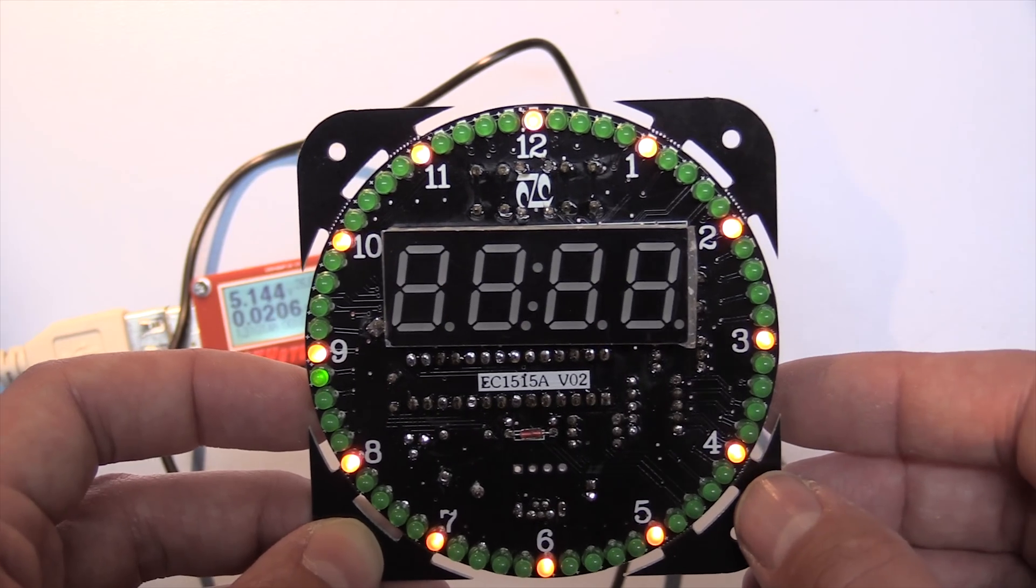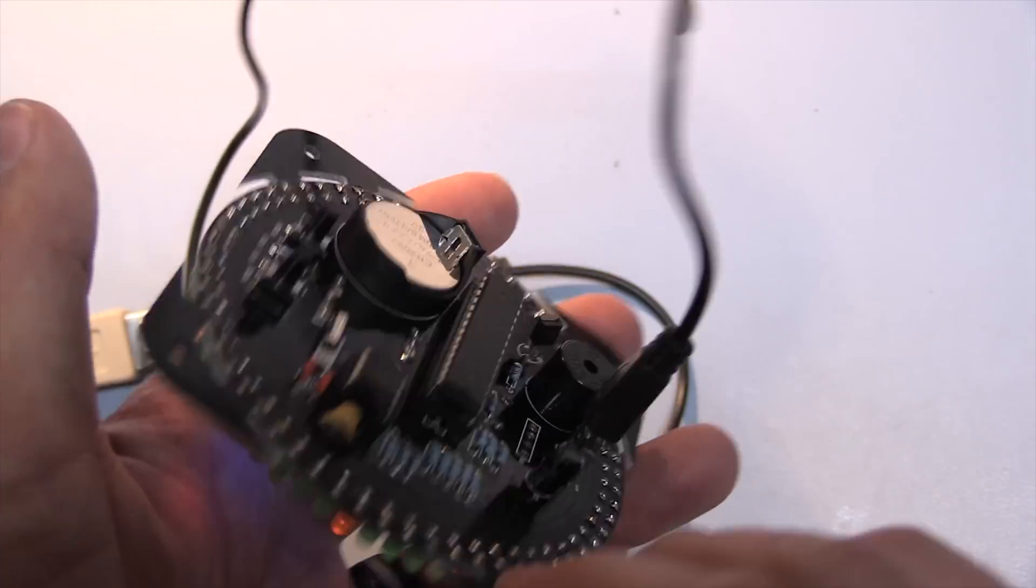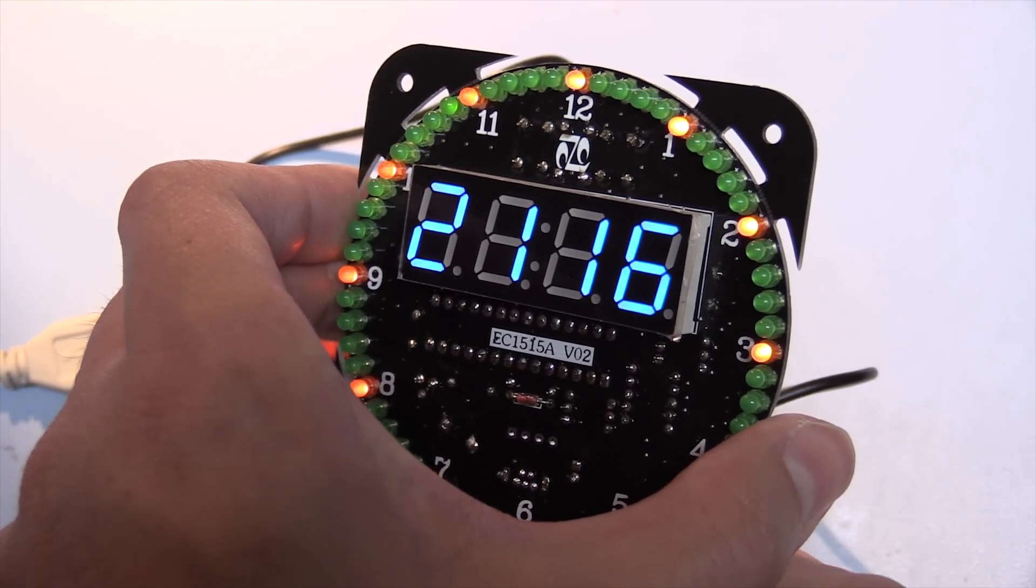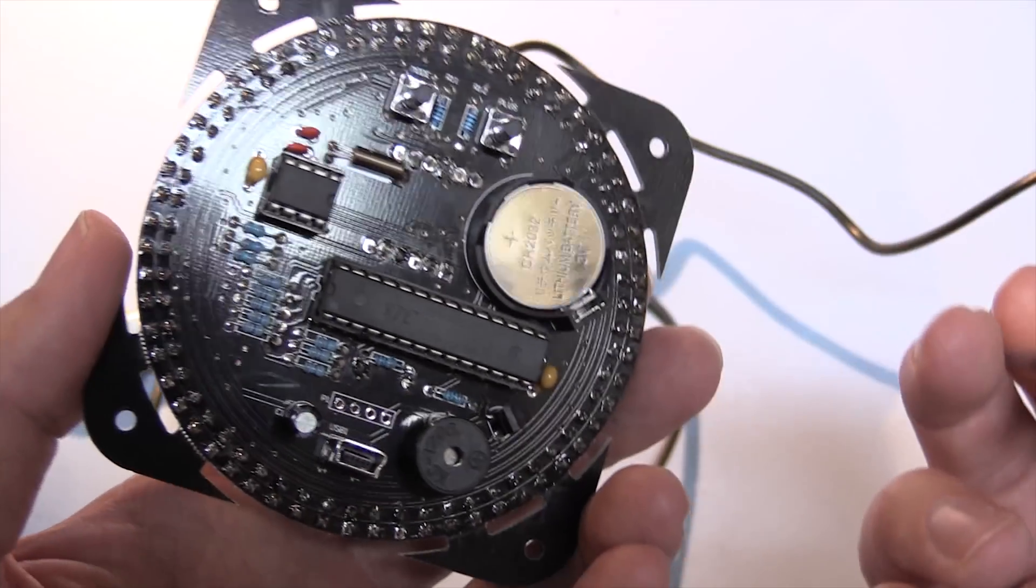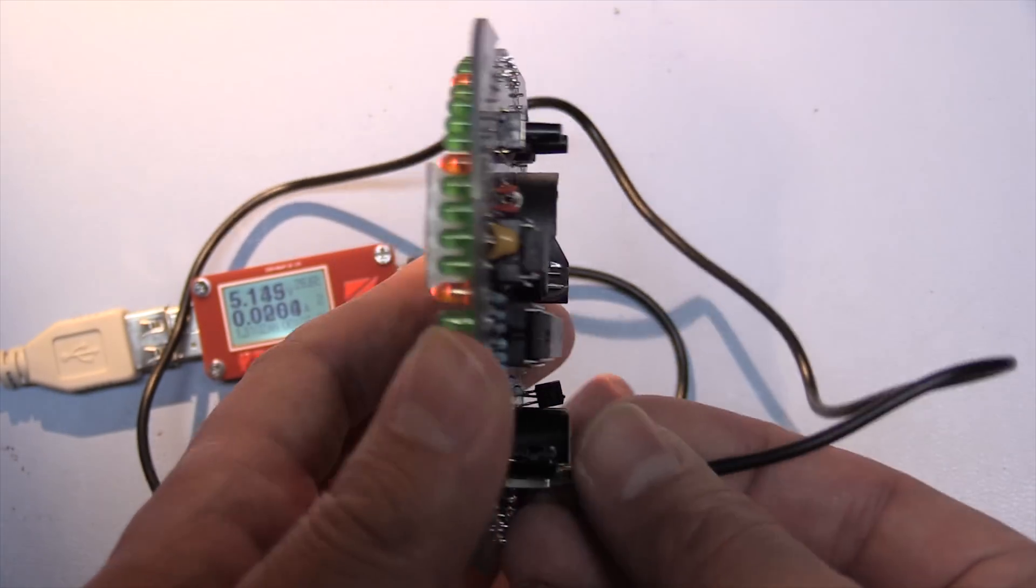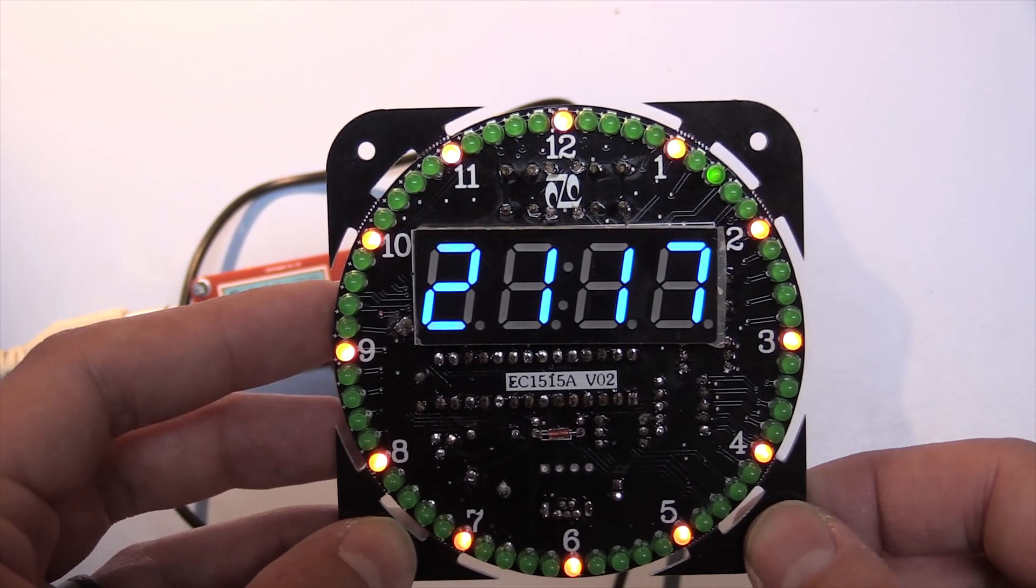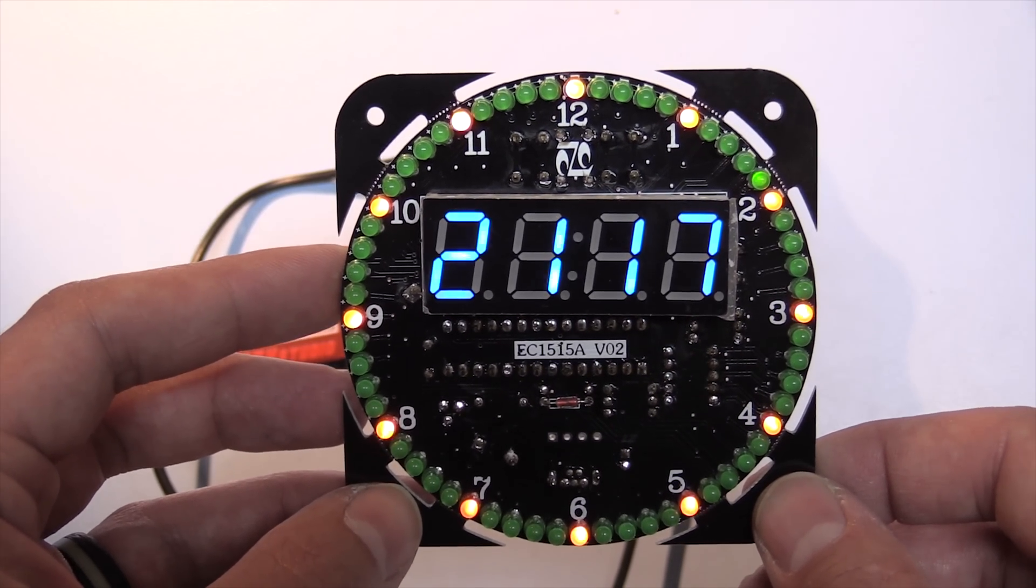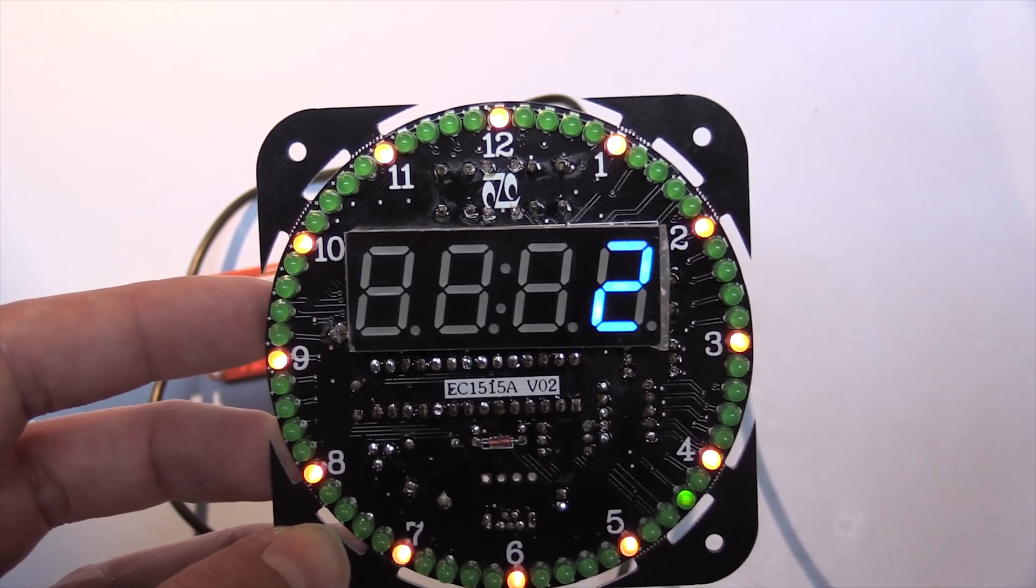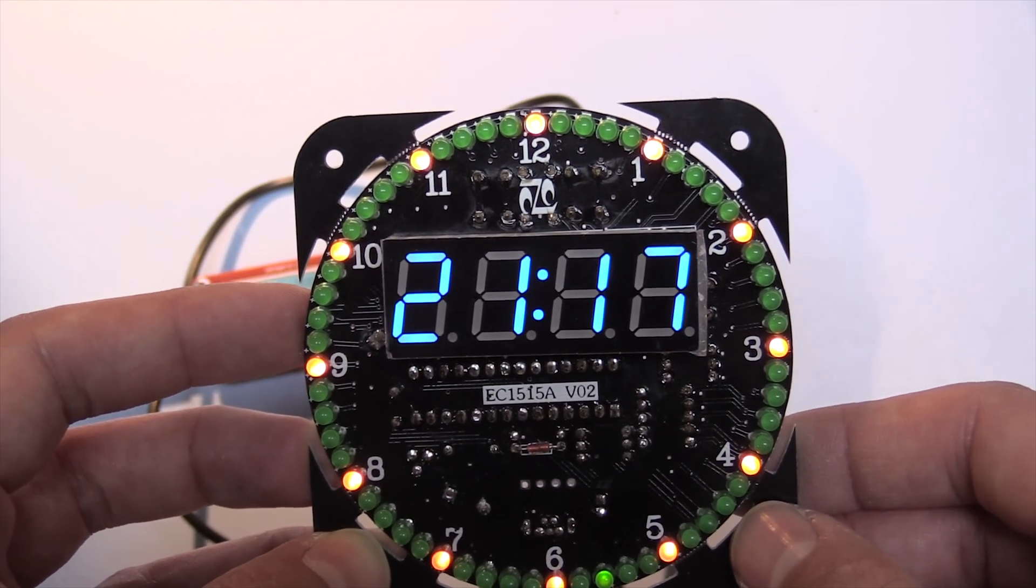It probably took about 40 minutes to construct overall including crafting around with the video and everything so that's not too bad at all. And we can just check whether it keeps time actually, so it says 2116 so I'll unplug the USB connector and we've obviously got the coin cell in there and then if we plug it back in 2117 and in fact the clock's just rolled over so yeah that seems to be working correctly. So a big thank you to Banggood, I'll put a link below for where you can purchase this if you would like to and until next time thanks for watching.